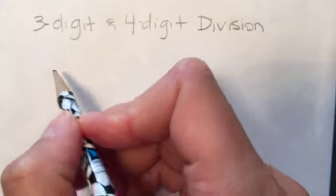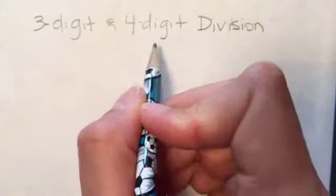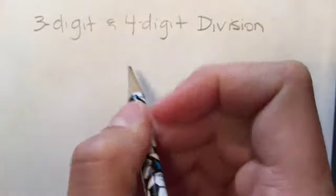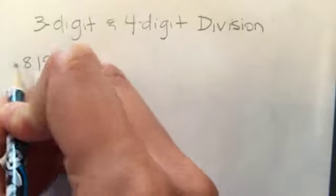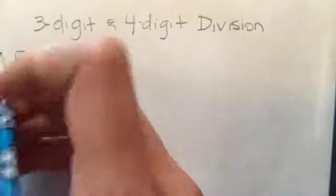Hi everyone, here is an example of three digit division and I'll also do an example of four digit division. So first we're going to do 819 divided by 3.